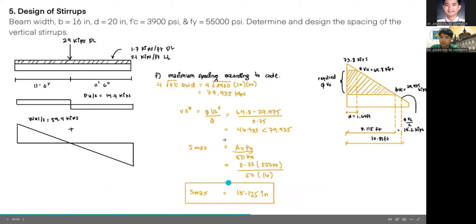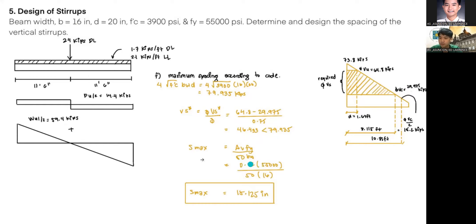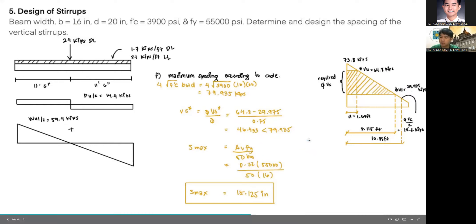For maximum spacing according to code, we check 4√F'c × b × d = 4 × √3000 × 16 × 20 = 79.95 kips. Since VS = 46.43 kips is less than this threshold, we use S_max = AV × Fy / (50 × b) = (0.22 × 55,000) / (50 × 16) = 15.125 inches.